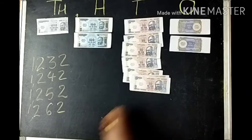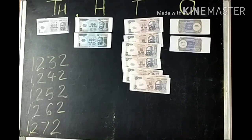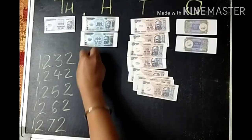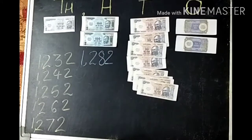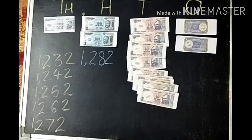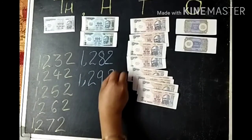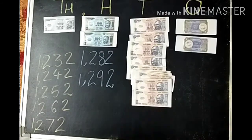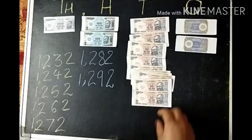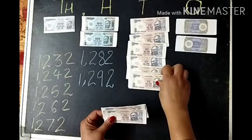If I put one more ten, this number will become one thousand two hundred and seventy-two. Then one thousand two hundred and eighty-two. If I put one more ten, the number will become 1292 — there are nine tens. What if I put one more ten over here?